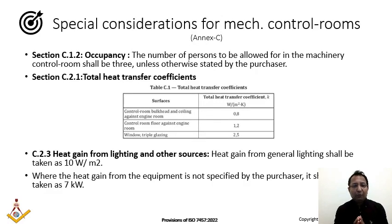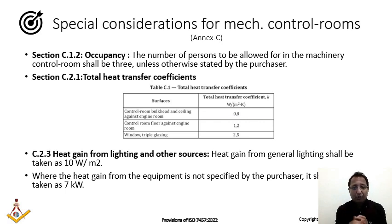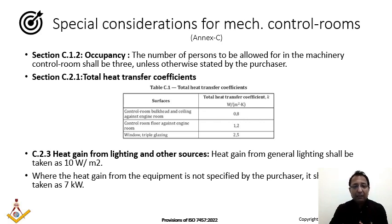Annexure C provides special considerations for machinery control rooms. Section C.1.2 states that the occupancy — number of persons — in the machinery control room should be 3 unless otherwise stated by the purchaser. The specific U-values for the control room are: bulkhead and ceiling against the engine room = 0.8 W/m²K; floor against the engine room = 1.2 W/m²K; windows with triple glazing = 2.5 W/m²K.